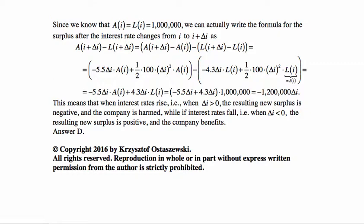The first is minus 5.5 delta I times A(I) plus 1/2 times 100 times delta I squared times A(I), and then we subtract the second one, which is minus 4.3 delta I times L(I) plus 1/2 times 100 times delta I squared times L(I), but L(I) is the same as A(I).